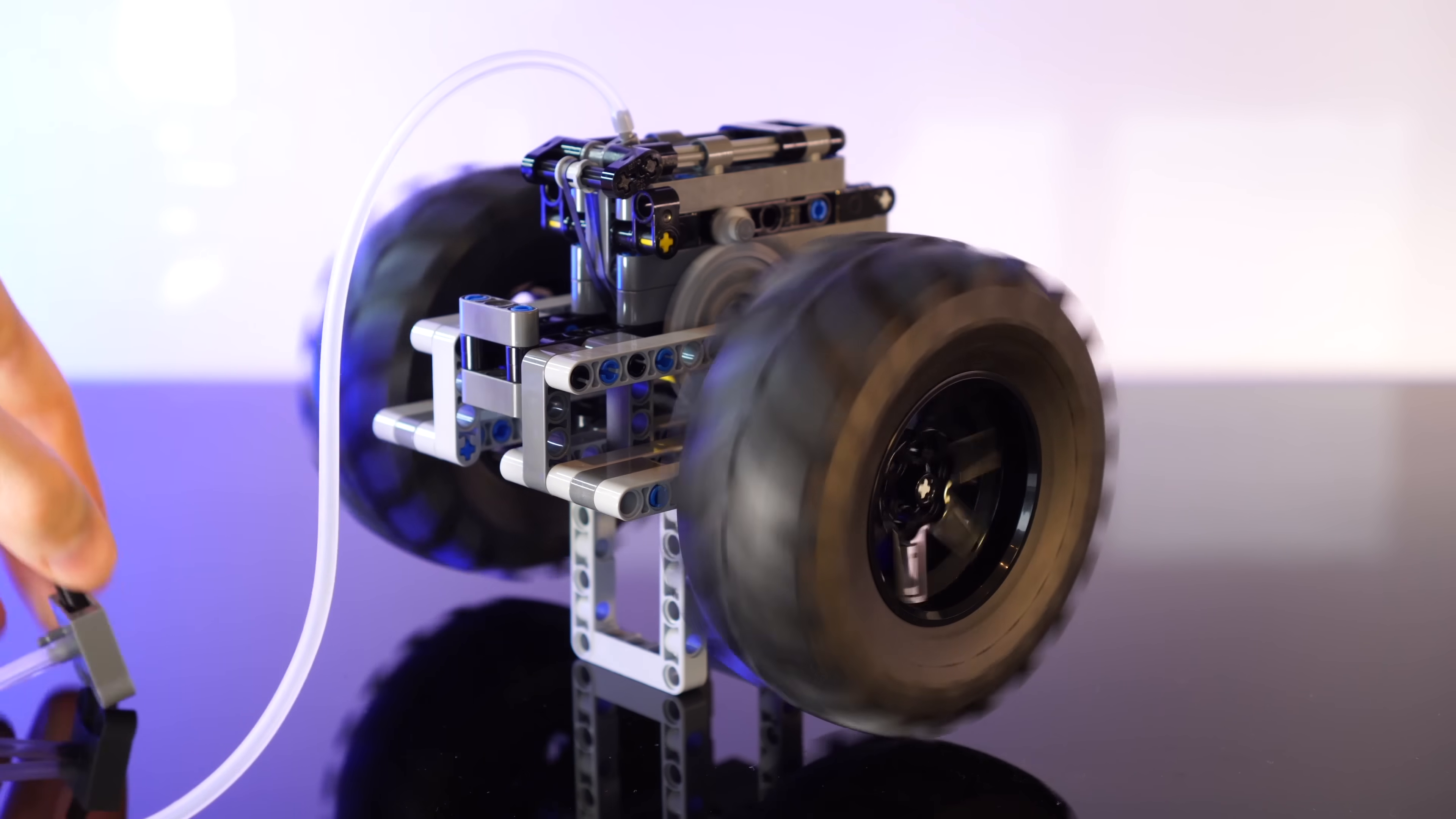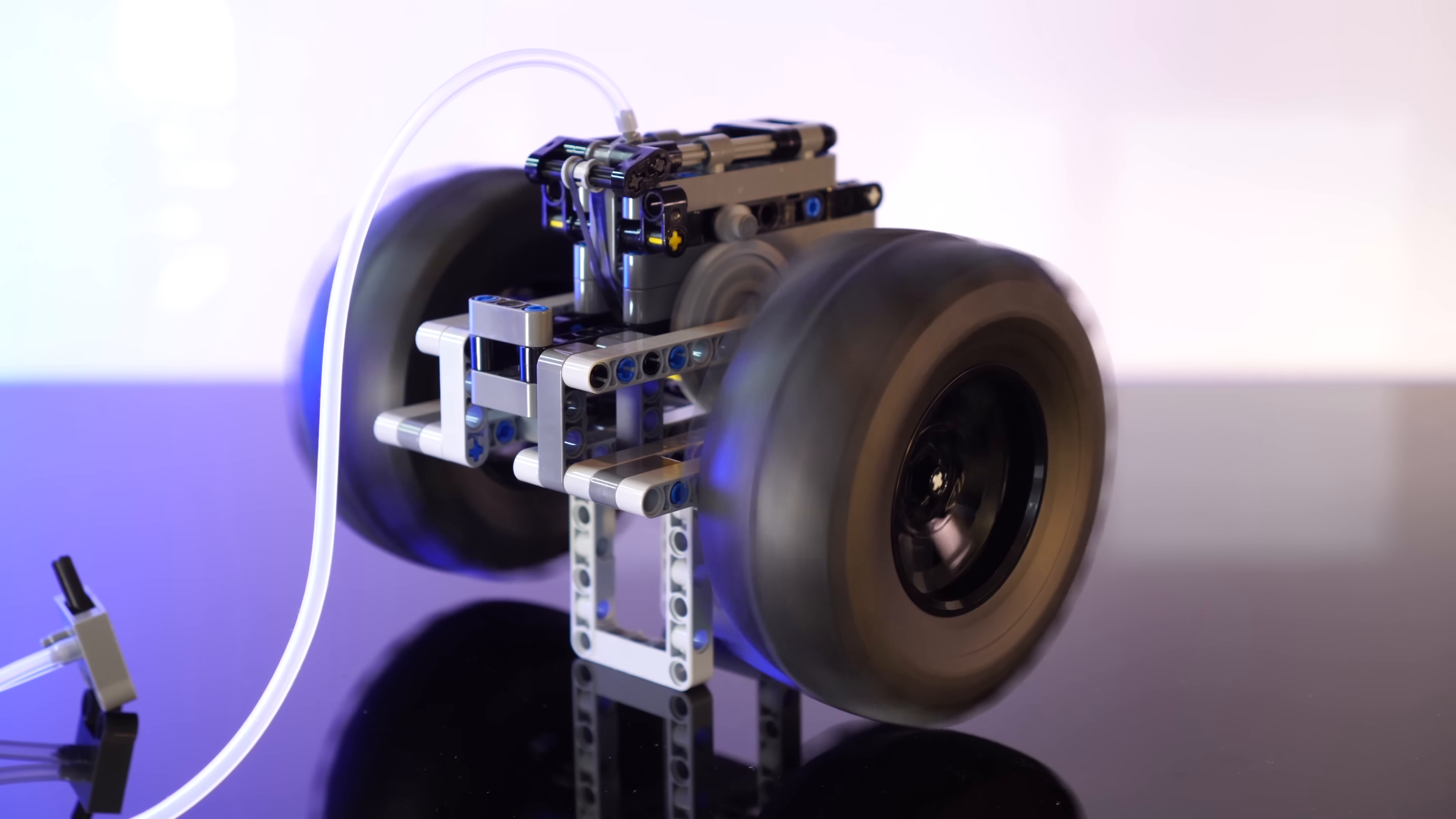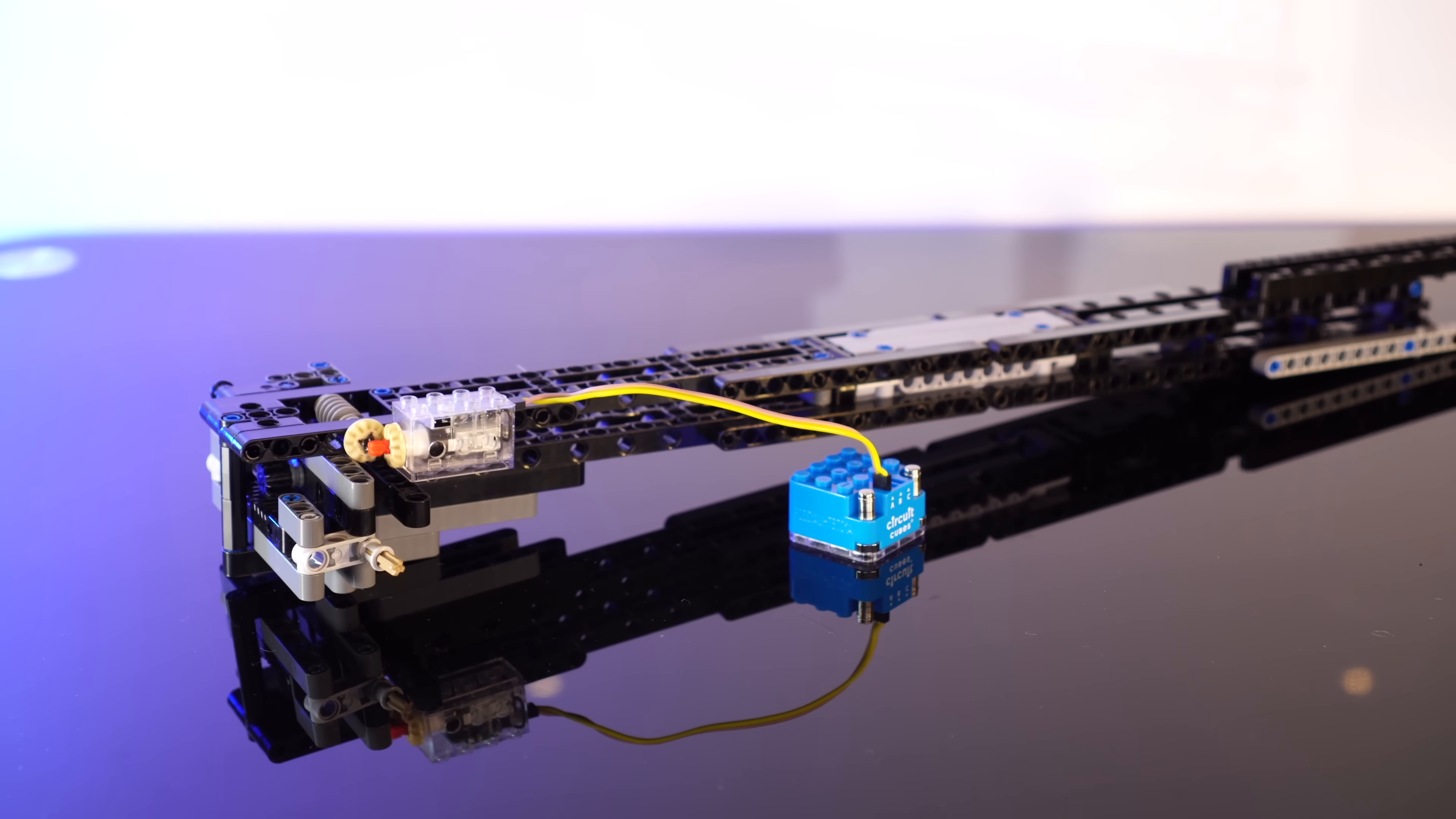Now, it seems a 2.0L air tank provides a good 5 seconds of strong power, and then another 20 to 25 seconds or so of gradually reducing power. Okay, well, we have power, but now we need steering.